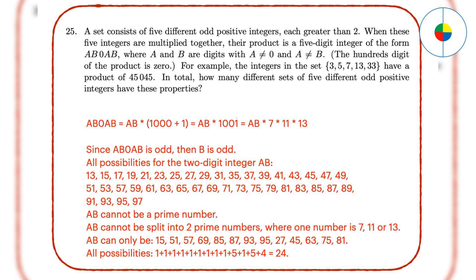Question 25: This is a complicated guessing game. You need to be familiar with the divisibility rules. Then, you know that AB0AB can be split into AB times 7 times 11 times 13. And, you can identify the scope for AB. Since it's five different odd integers, A and B have to be odd integers. AB cannot be a prime number. Otherwise, there will only be four numbers. AB cannot be split into two prime numbers, where one number is 7, 11, or 13. Otherwise, there will be duplicate numbers.